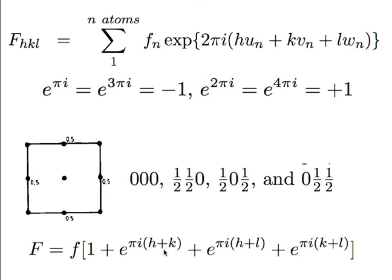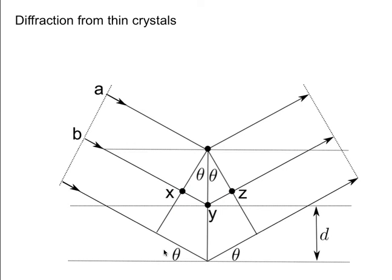Bear in mind that f represents an amplitude, so it can be negative; but we want intensity. So we look at |F|² — or F·F* if there is a complex number. This is a general method of working out whether a reflection should be missing or not.